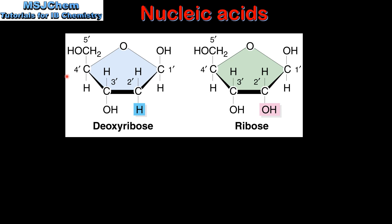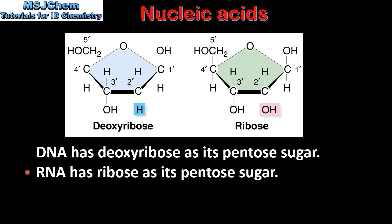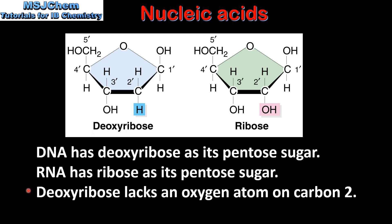Next we look at the difference in the pentose sugars in DNA and RNA. DNA has deoxyribose as its pentose sugar; RNA has ribose as its pentose sugar. Deoxyribose lacks an oxygen atom on carbon number 2. In ribose there's an OH group bonded to carbon number 2, but deoxyribose is lacking an oxygen atom on carbon number 2.